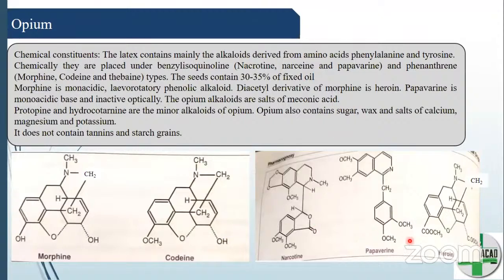Major alkaloids of opium are morphine, codeine, and thebaine — placed under the phenanthrine class. Narcotine, narceine, and papaverine are placed under the benzylisoquinoline class. Morphine is a monoacidic, levorotatory phenolic compound. Diacetyl derivatives of morphine give heroin — the hydroxyl group is replaced by an acetoxy group. Codeine is methoxy morphine. Papaverine is a monoacidic base and is inactive optically. Opium alkaloids are salts of meconic acid.